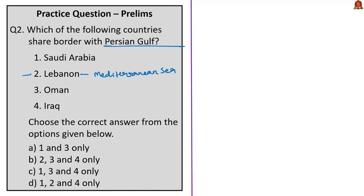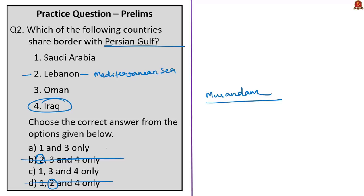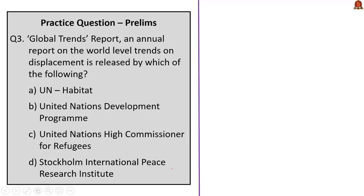Since option 2 (Lebanon) is wrong, you can easily eliminate options B and D, leaving options A and C. Saudi Arabia and Oman share borders with the Persian Gulf. The Musandam Peninsula of Oman borders the Persian Gulf, and Iraq also shares a border with the Persian Gulf. Therefore the correct answer is option C: 1, 3, and 4 only.